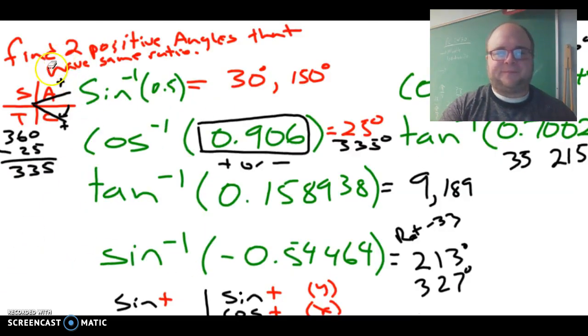Then we just did finding some angles. I gave a bunch of decimals and you had to find the two angles that could produce them. When you punch this into your calculator you get 30, but where else is sine positive?